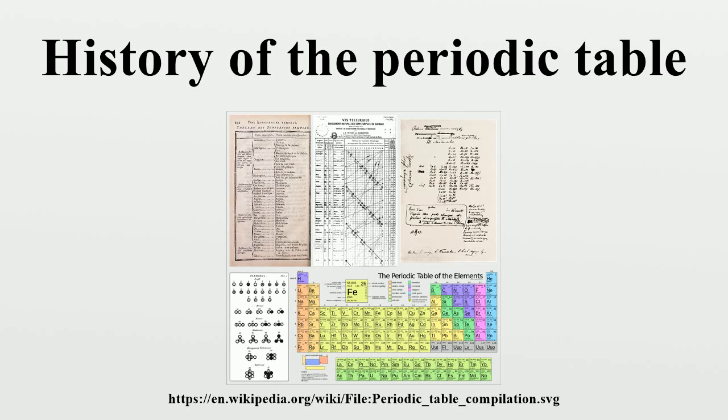Lavoisier's list also included light and caloric, which at the time were believed to be material substances. He classified these substances into metals and non-metals, while many leading chemists refused to believe Lavoisier's new revelations. The elementary treatise was written well enough to convince the younger generation.